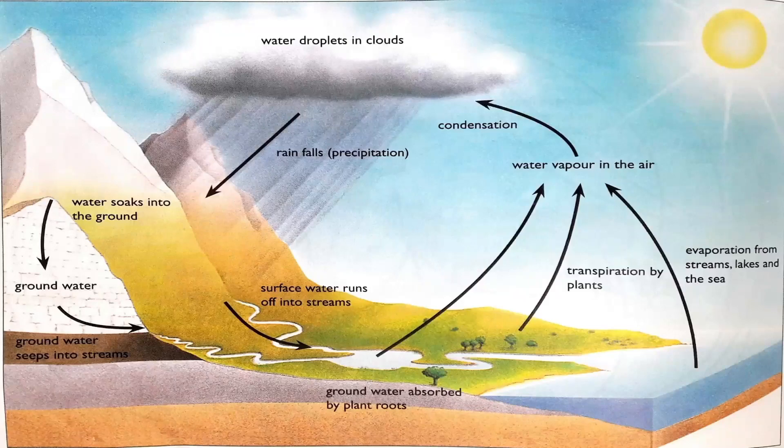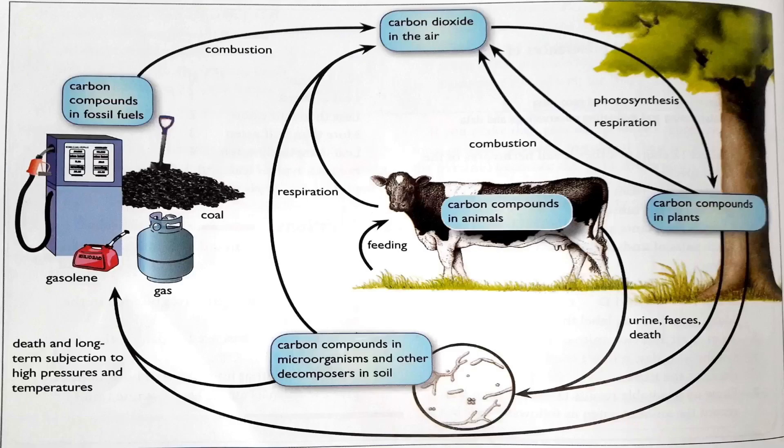A few key words you need to know: respiration, because water is released through it, and water vapor from animals breathing also enters the cycle. The key terms are evaporation, transpiration, condensation, and precipitation.